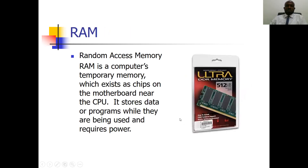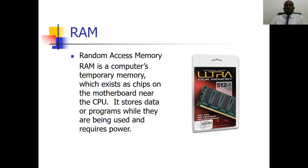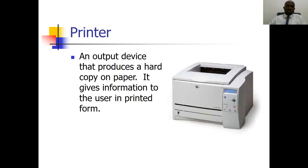We also have Random Access Memory (RAM), which is a computer's temporary memory that exists as chips on the motherboard near the CPU. It stores data or programs while they are being used and requires power, meaning that once your power is off, you lose the data on the RAM. That is why people refer to it as temporary and also volatile — it stores data temporarily. The opposite of RAM is ROM, which stores data permanently.